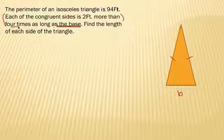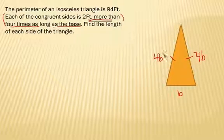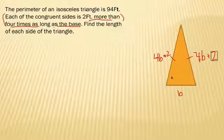Now, if I work backwards, it says four times as long as the base. So, these legs of an isosceles triangle are four times as long. So, that would be 4B. Now, we work backwards through the sentence: two feet more than four times as long as the base. So, each of these now is going to be called 4B plus 2. So, you read the question and you have to work backwards and figure out how to label the parts.